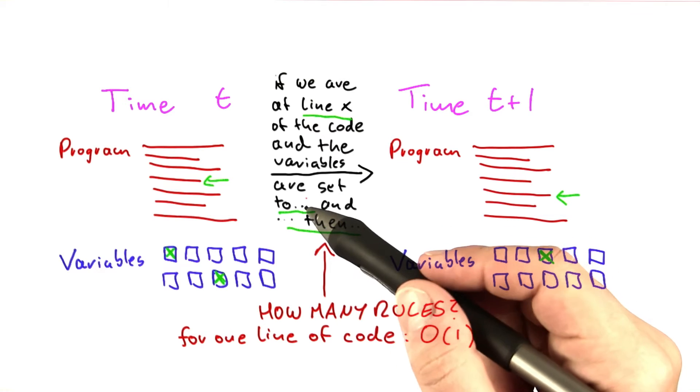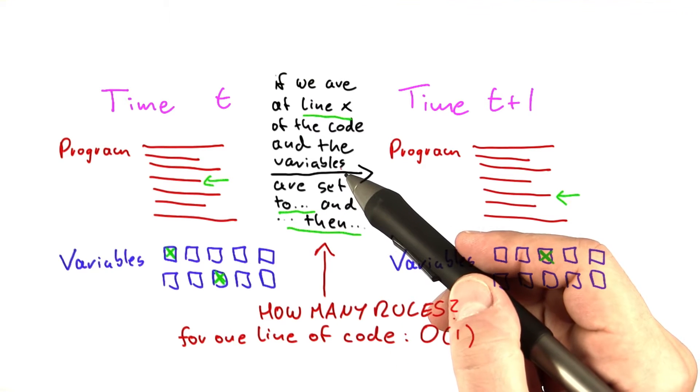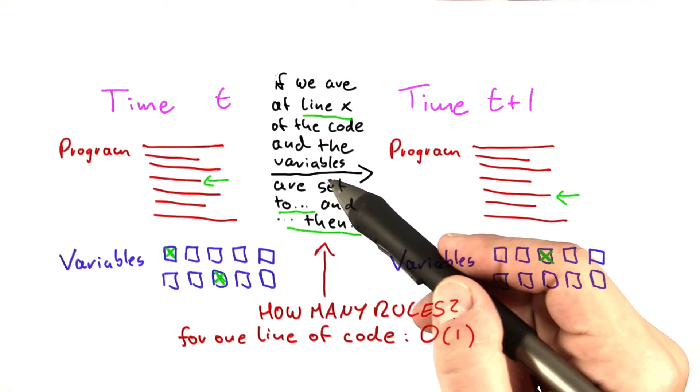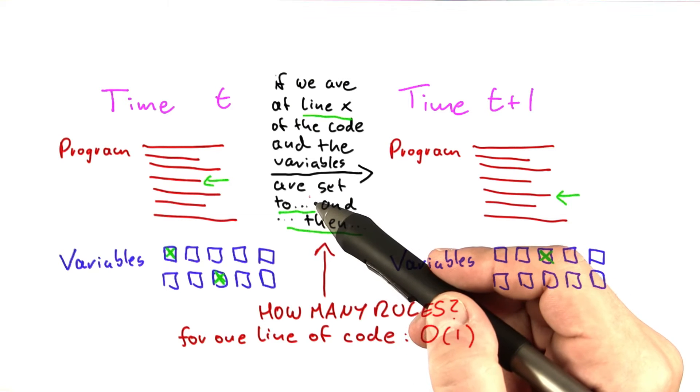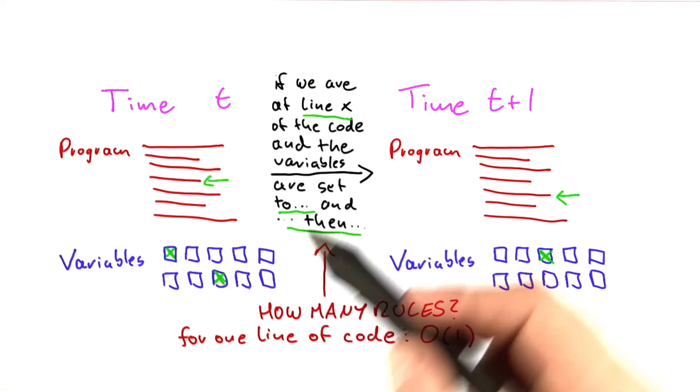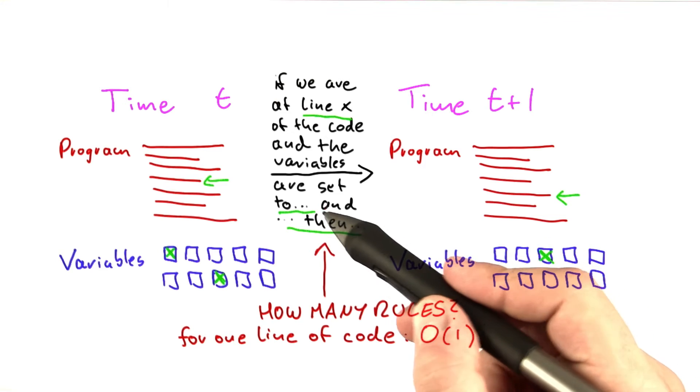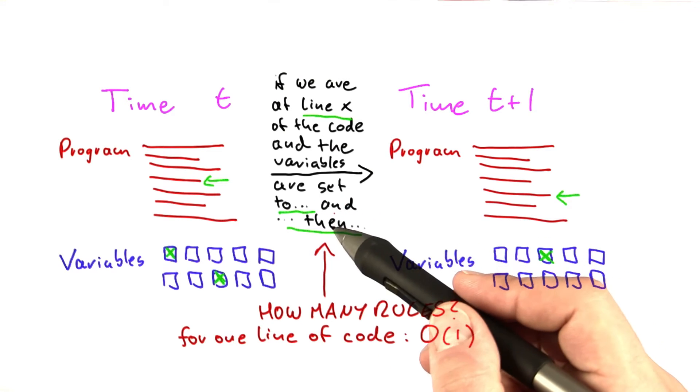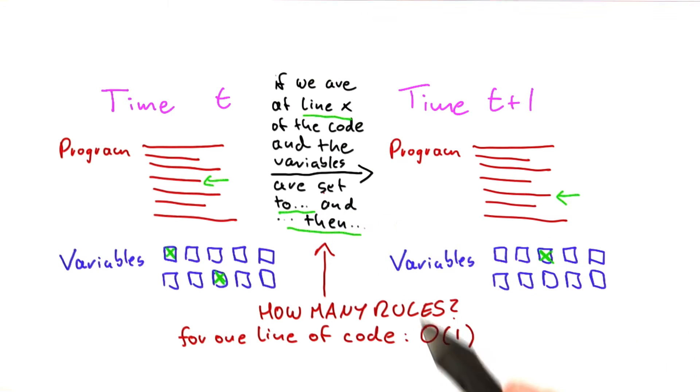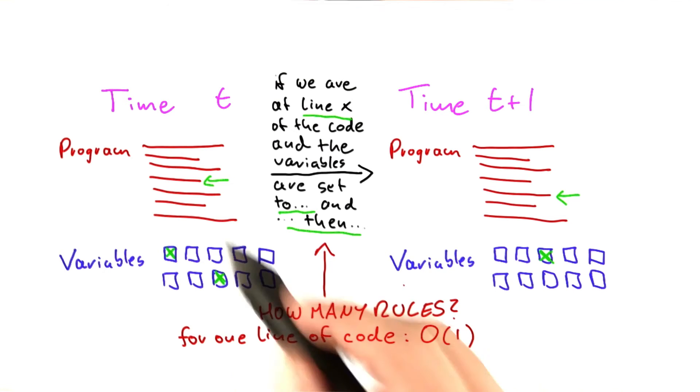Well, because we said that on the RAM variables cannot get arbitrarily large. So there's only a constant number of different values that a variable can take. So even if we have three different variables and consider all of the combinations, it will be a huge number usually, but it will be a constant number for one line of code.